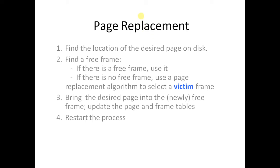In page replacement techniques, there are some key points. First, find the location of the desired page on disk. Find a free frame — if there is a free frame, use it. If there is no free frame, use a page replacement algorithm to select a victim frame. Bring the desired page into the newly freed frame. Update the page and frame tables. Then restart the process.